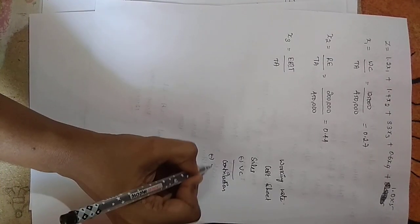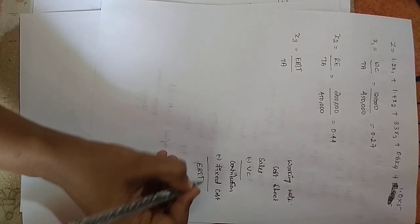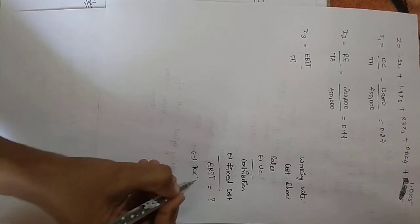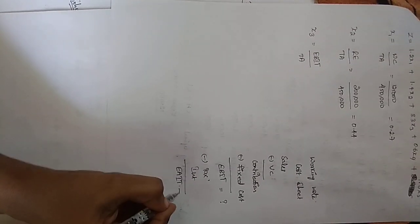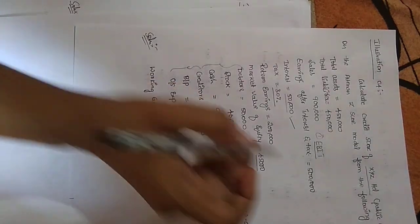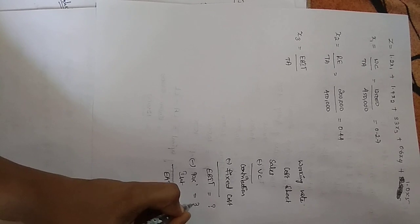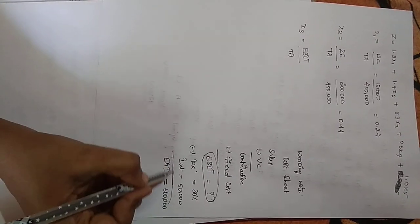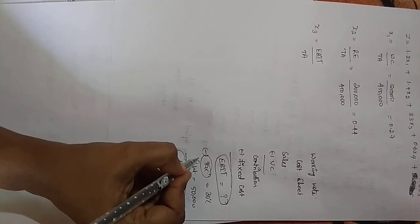From the income statement structure: sales minus variable cost equals contribution; less fixed costs and selling and administrative expenses gives earnings before interest and tax (EBIT). After deducting interest and taxes we get earnings after interest and tax. The problem gives earnings after interest and tax as 5 lakhs, so we need to reverse-calculate to find EBIT.